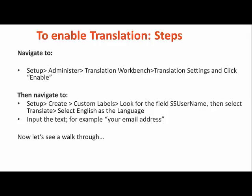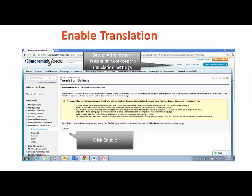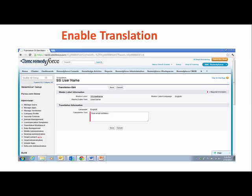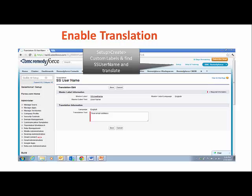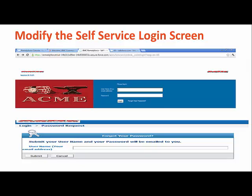Overwriting the text can be done by first navigating to the Translation Workbench and choosing to enable translation. Then you're going to be able to select what you want to translate — in other words, what you want to override with your new text. Once you've enabled translation and provided your new overwriting text, you can see how easy it was to modify the text on the login screen.